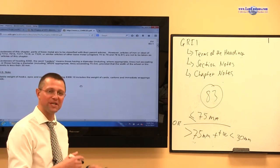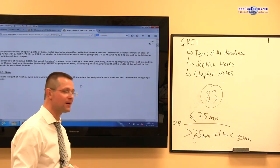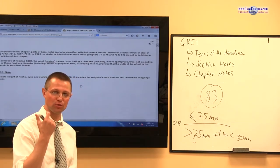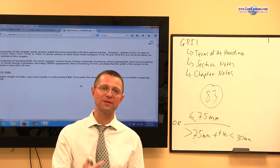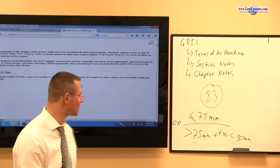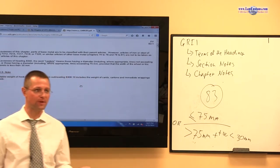If this measurement criteria is not met, you cannot classify the caster even if it looks like a caster, acts like a caster, behaves like a caster and sells like a caster. You cannot classify it in 83.